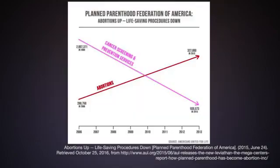This is an interesting example of a data visualization which was created on purpose by Americans United for Life as a propaganda piece against Planned Parenthood. Can you spot any issues with the graph? We will discuss this graph in a little more depth later.